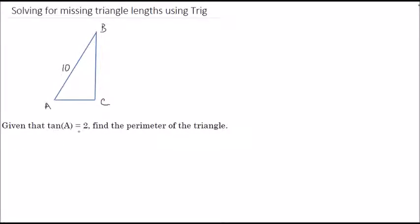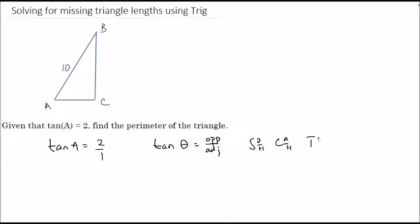We're given that tan(a) = 2 and asked to find the perimeter of the triangle. We convert this to a ratio of 2 over 1, because tangent is opposite over adjacent from SOHCAHTOA. So the opposite of angle A versus the adjacent of angle A is in a ratio of 2 to 1.